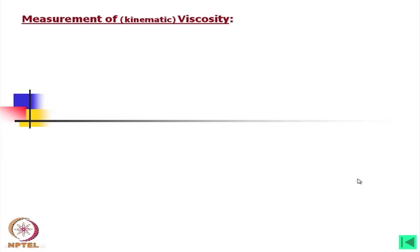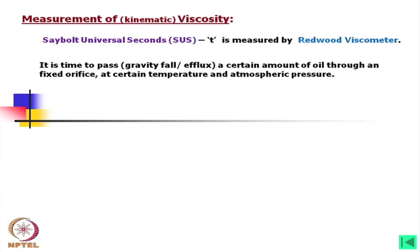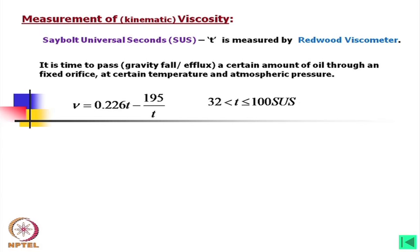For measurement of kinematic viscosity, the Saybolt Universal Seconds (SUS) is the time measured using a Redwood viscometer. We can say it is the time for gravity fall or efflux of a certain amount of oil through a fixed orifice at a certain temperature and atmospheric pressure. The time counted is called Saybolt Universal Seconds; there are other instruments such as the Redwood viscometer which are also used.